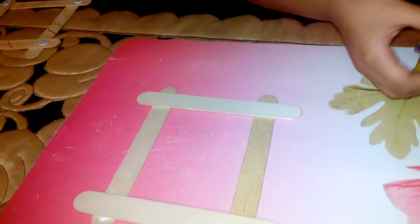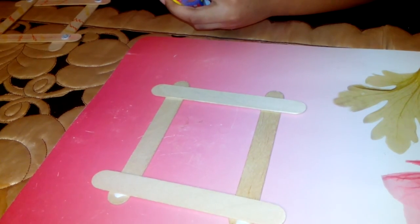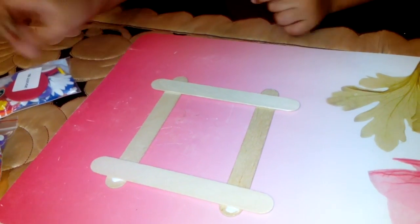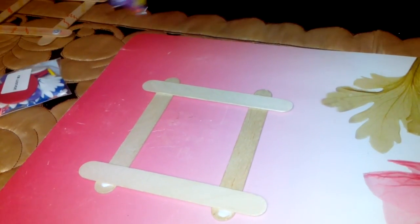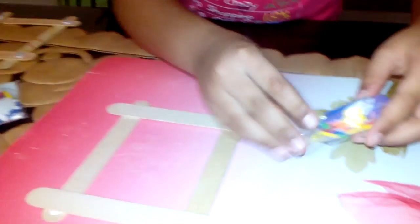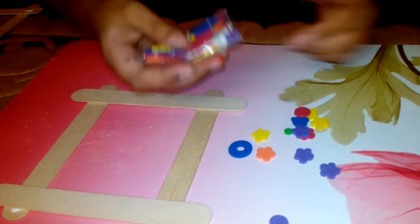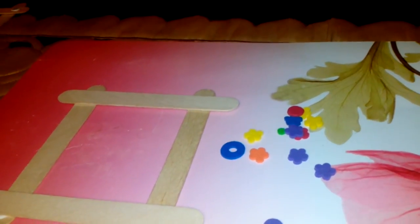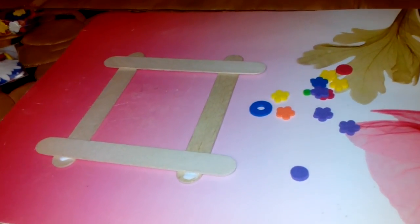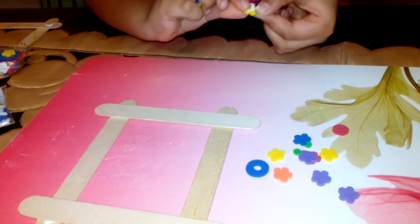And now I'm using some decorative items to decorate my photo frame. So I have these small foam flowers. I'll show them. Here they are. And I'm going to put one of the flowers on each of the corners. So I'm using four different kinds of flowers.